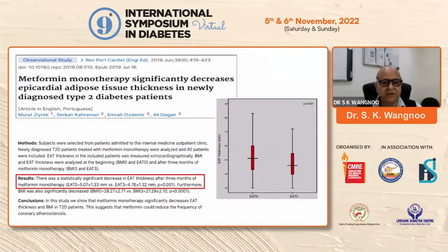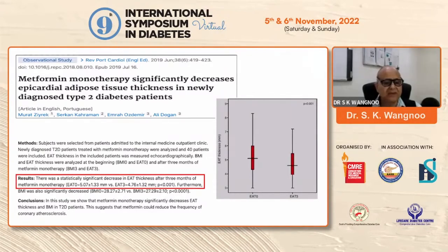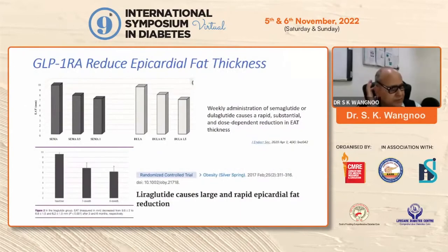The third drug, metformin, has also been shown to significantly decrease epicardial adipose tissue in newly diagnosed type 2 diabetes patients. In this paper published a few years back, a statistically significant decrease in epicardial adipose tissue thickness after three months of metformin monotherapy was seen — indicating that metformin alone can help to reduce epicardial fat.